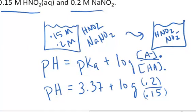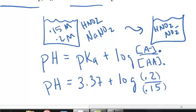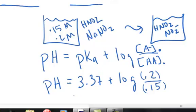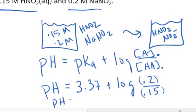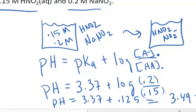And when you do the math, you end up with pH equals 3.37 plus 0.125, which equals 3.49. So the pH of this particular buffer system is 3.49.